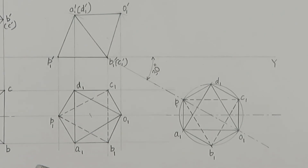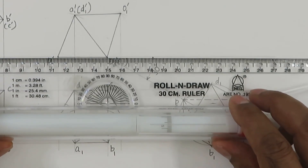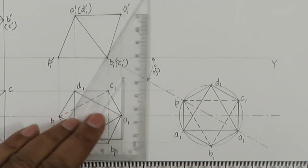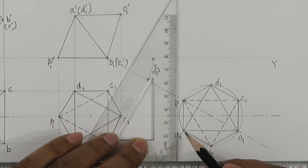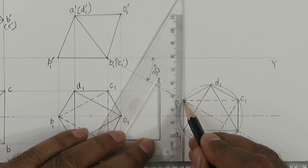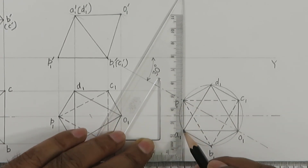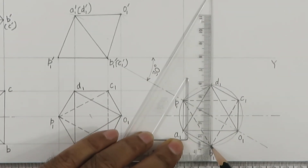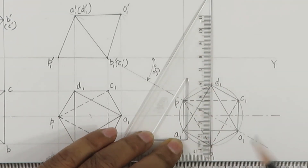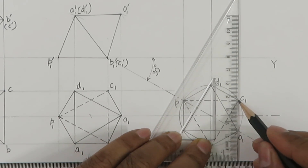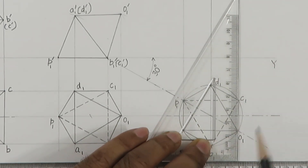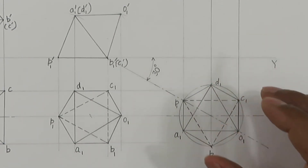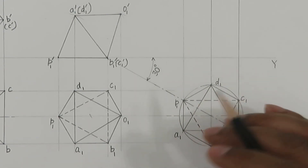Now we will draw the projections to find the front view. First we will project from the top view. You can see that A1 and P1 are aligned, B1 and D1 are aligned, and O1 and C1 are aligned. This just happened in this particular case — depending upon different configurations you may have different orientations, but in this case they are aligned.